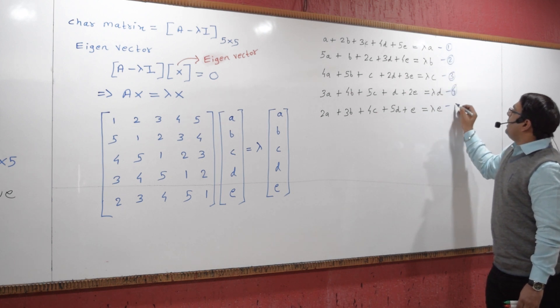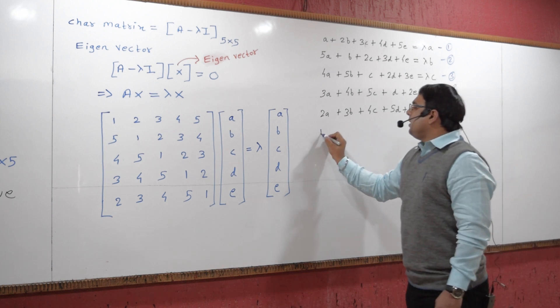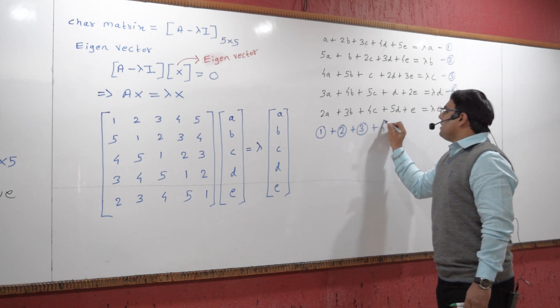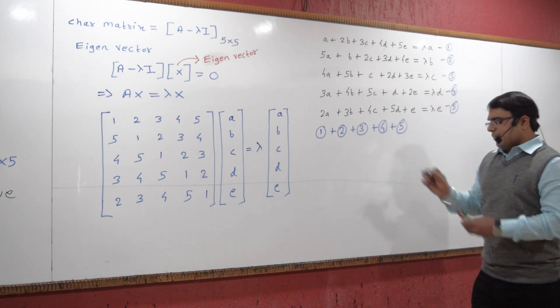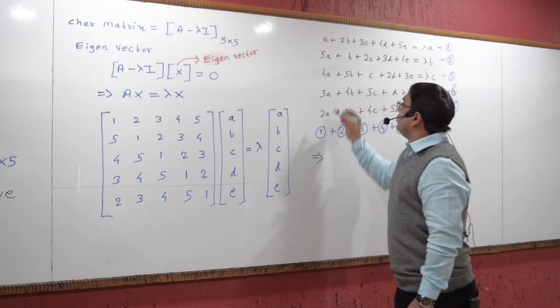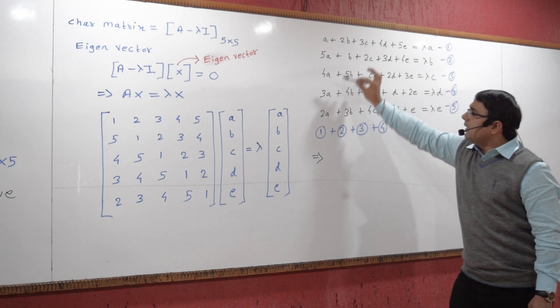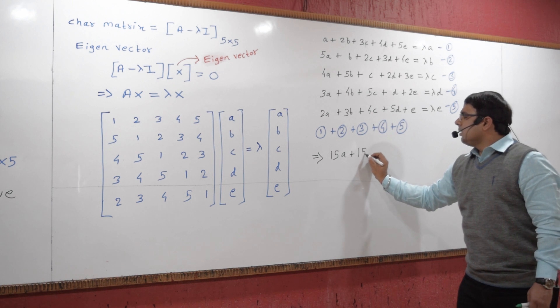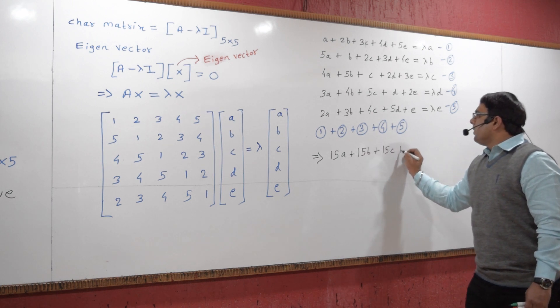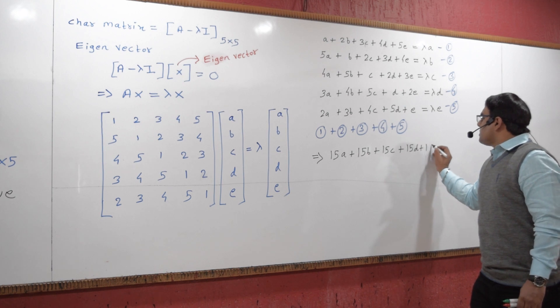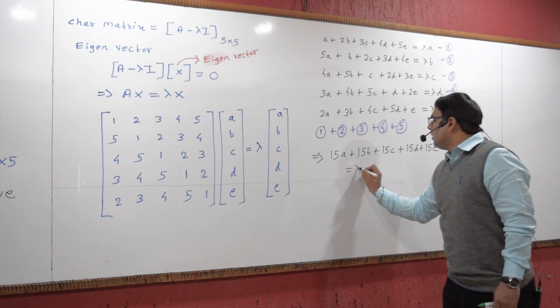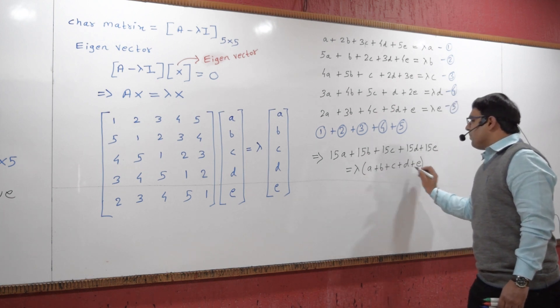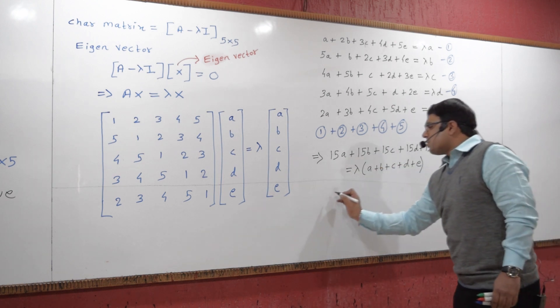Now let us add all these equations: equation 1 plus equation 2 plus equation 3 plus equation 4 plus equation 5. We will get 15a plus 15b plus 15c plus 15d plus 15e equals lambda times (a plus b plus c plus d plus e).